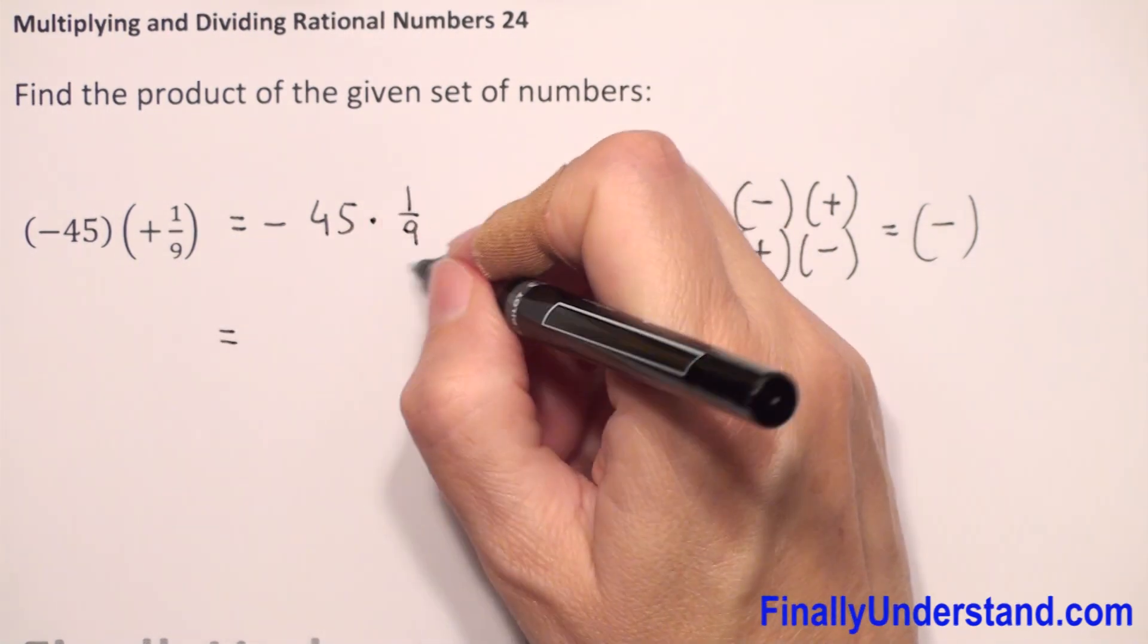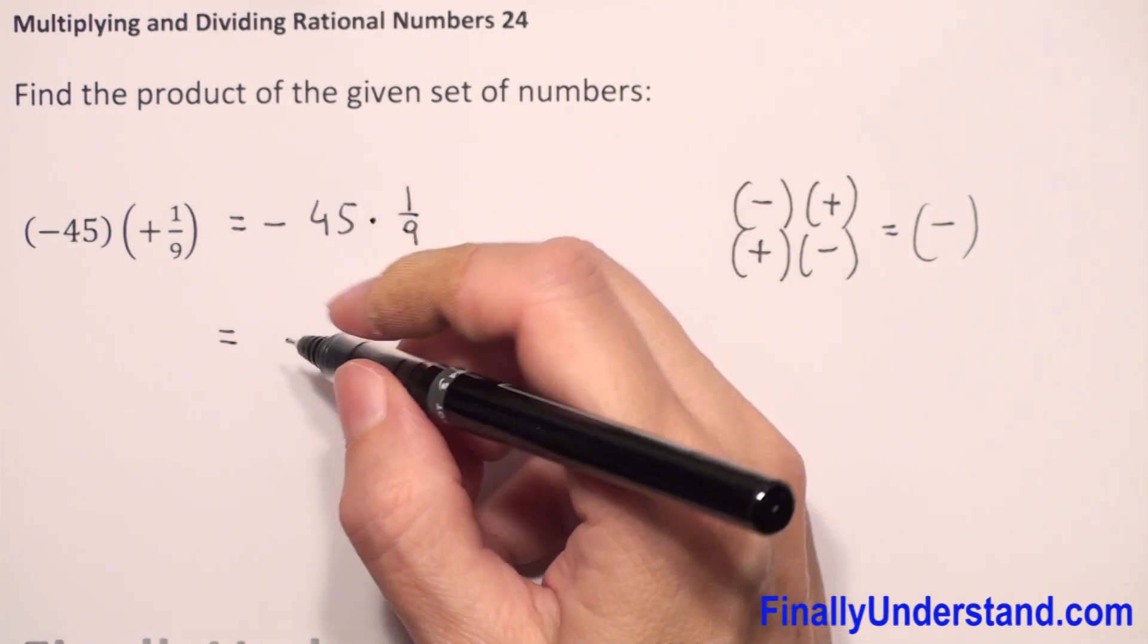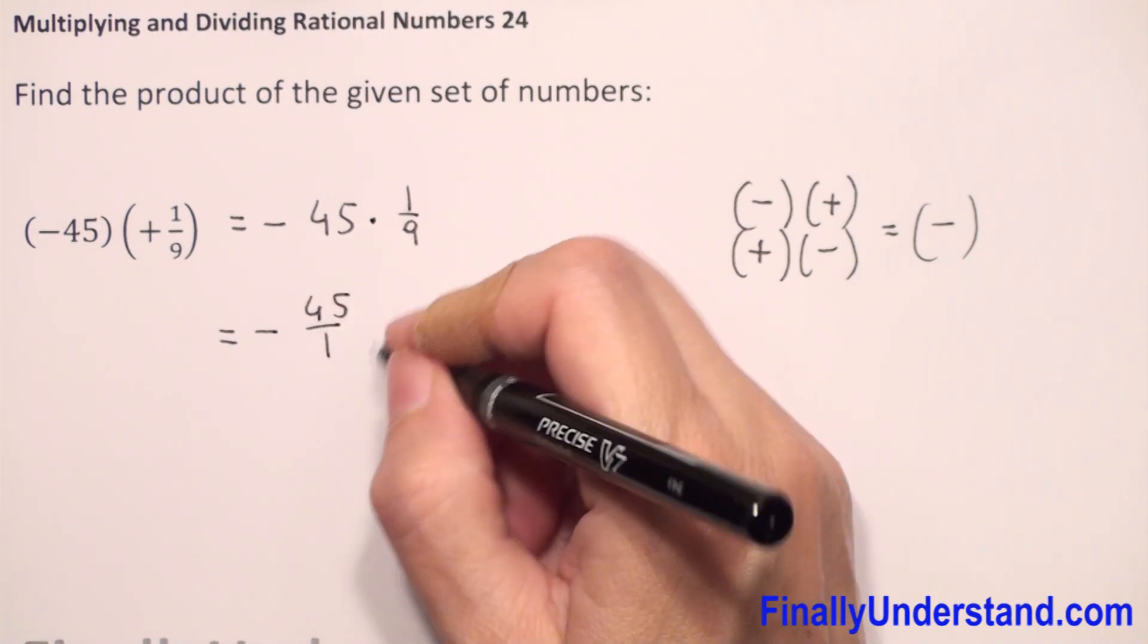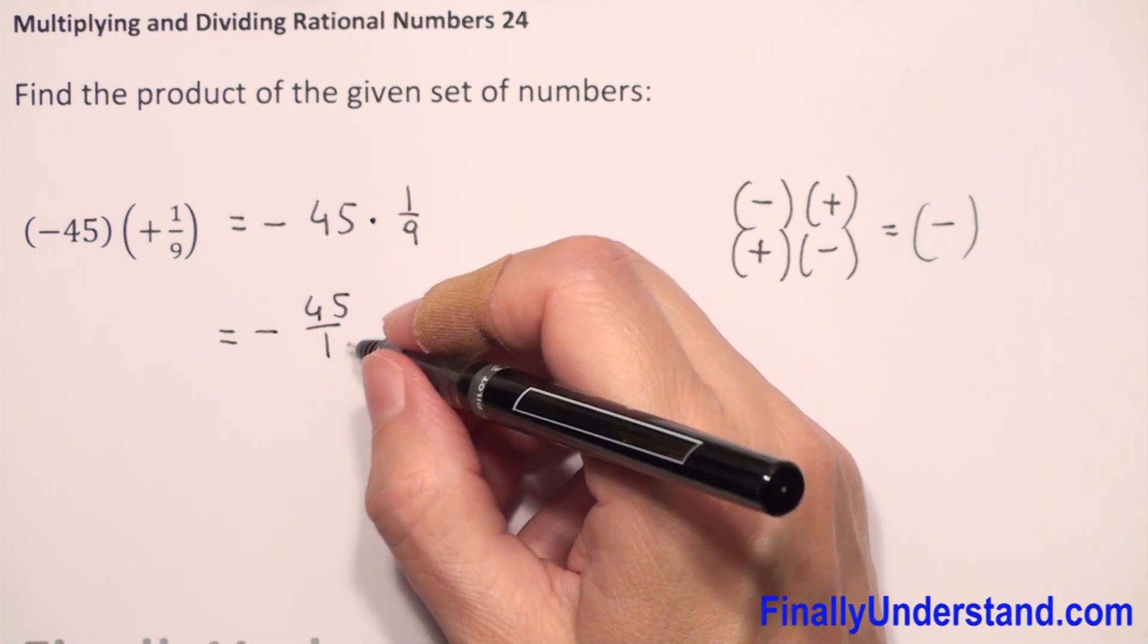This equals - because we have a fraction, I will change 45 to a fraction also. So negative sign we copy, 45 over 1. We can write it as a fraction and I didn't change anything - 45 divided by 1 is 45.